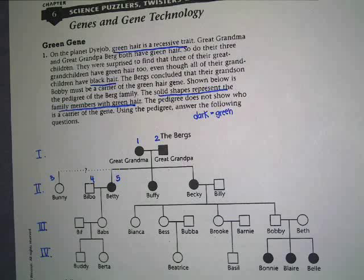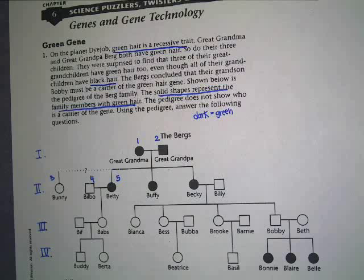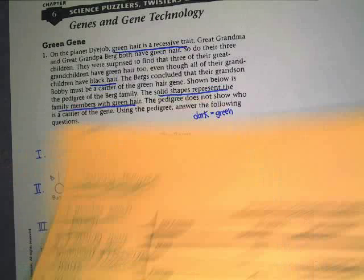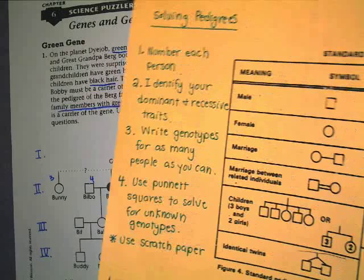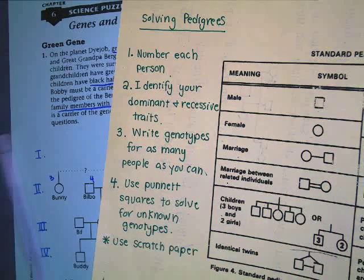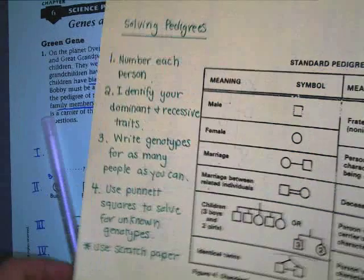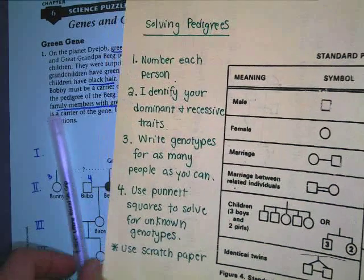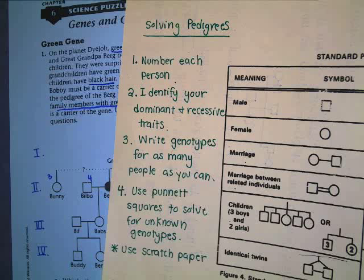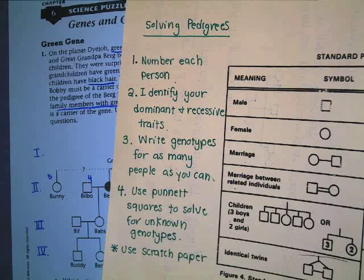We're trying to figure out everyone's genotype — who, if any of these people, are carriers, or who has half their shape colored in. If you look at your notes, I'd have those out beside you. What's the first thing we're supposed to do? Number each person. We talked about how it's not very important for this one because they have names, so we'll go to step number two.